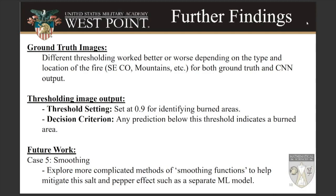Regarding thresholding the model output: when we classify, we have a threshold for whether to call something burned or unburned. We went to almost the extreme — if there's even a 10% chance the model thinks it's burned, we classify it as burned. This creates overestimation, and the reason we did this was to capture more of the shape and burned area of the fire. But that 0.1 threshold may be causing us to miss granular details due to that overestimation.